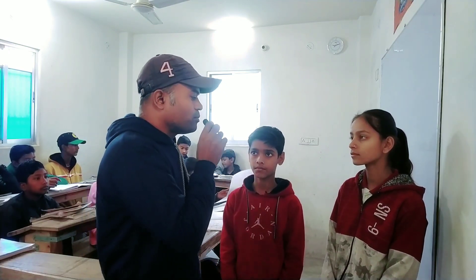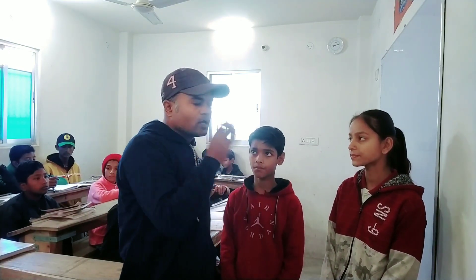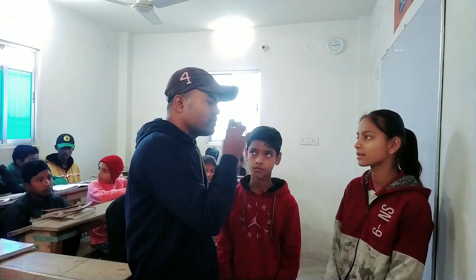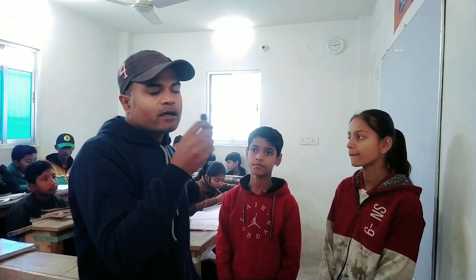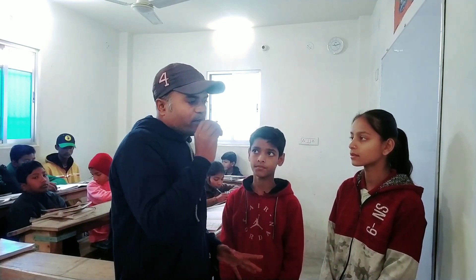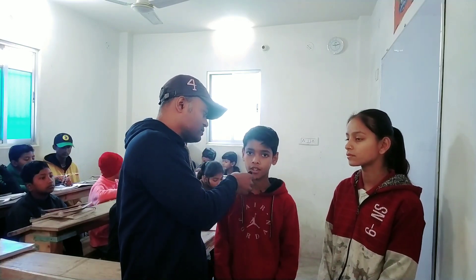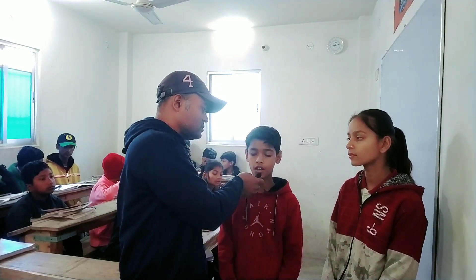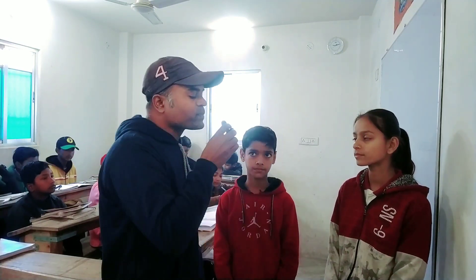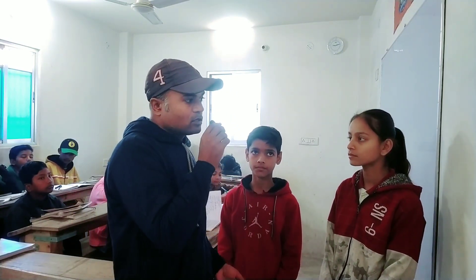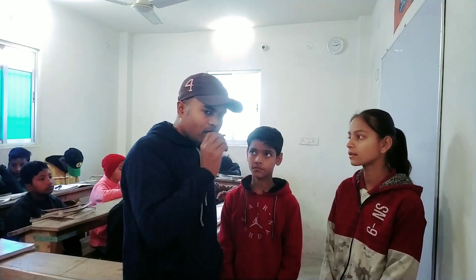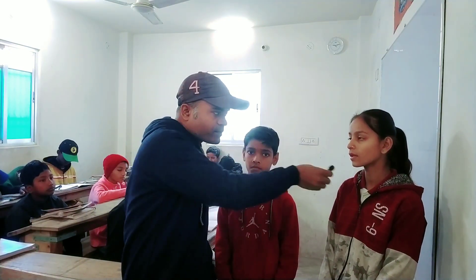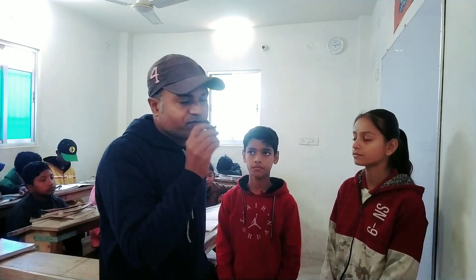Mere bhai ke paas panch bats hai — My brother has five bats. Mere sister ke paas chhe ball hai — My sister has six balls. Mere paas do tennis balls hai — I have two tennis balls. Mere bhai ke paas do carom boards hai — My brother has two carom boards. Mere choti bhan ke paas panch guriya hai — My younger sister has five dolls. Mere choti bhan ke paas panch books hai — My younger brother has five books.